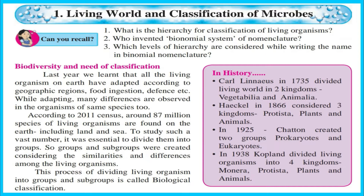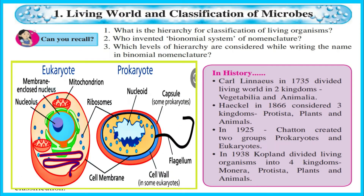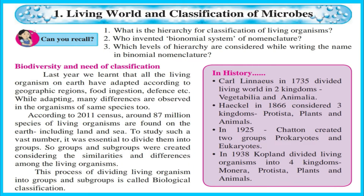In history, Carl Linnaeus in 1735 divided the living world into two kingdoms: Vegetabilia and Animalia. Haeckel in 1866 considered three kingdoms: Protista, Plants, and Animals. In 1925, Chatton created two groups: Prokaryotes and Eukaryotes. In 1938, Copeland divided living organisms into four kingdoms: Monera, Protista, Plants, and Animals.